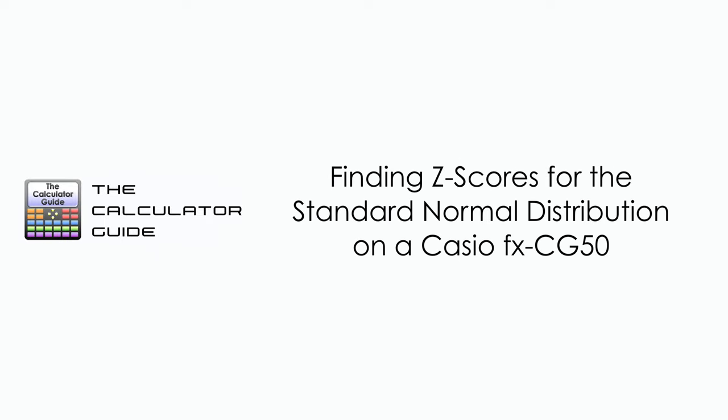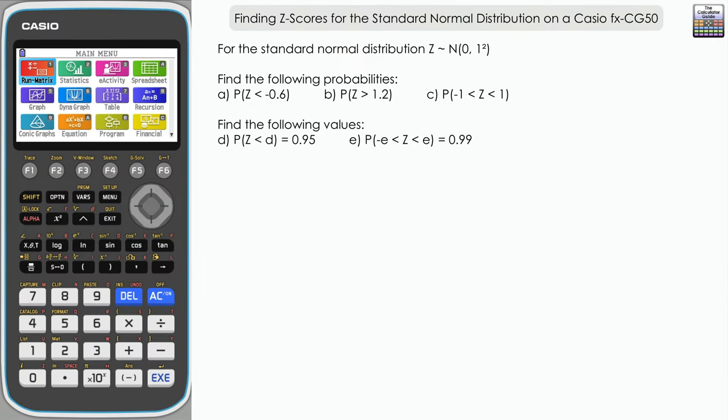Hello and welcome to the calculator guide video on finding Z-scores for the standard normal distribution on a Casio FXCG50. For the standard normal distribution, we have Z which is normally distributed with a mean of 0 and a variance of 1 squared, therefore the standard deviation is 1. For the first three parts of the question, we've got to find the probabilities from given Z-scores, and for the second two parts, we've got to find the relevant values given the probabilities.